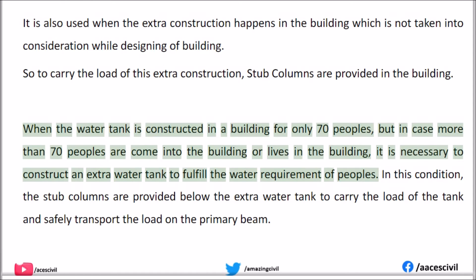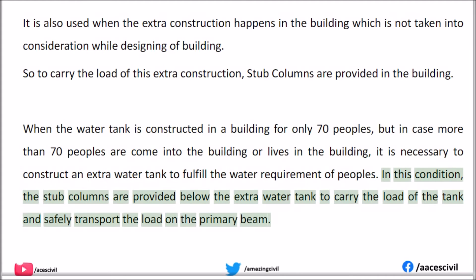For example, when a water tank is constructed in a building for only 70 people, but in case more than 70 people come into or live in the building, it is necessary to construct an extra water tank to fulfill the water requirement. In this condition, stub columns are provided below the extra water tank to carry the load of the tank and safely transfer the load on the primary beam.